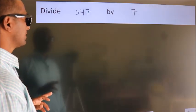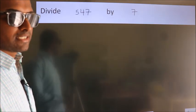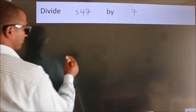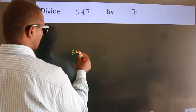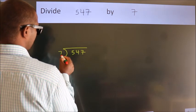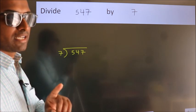Divide 547 by 7. To do this division, we should frame it in this way. 547 here, 7 here. This is your step 1.